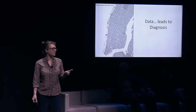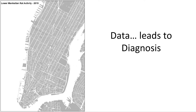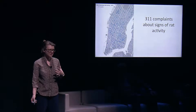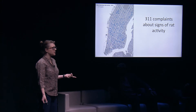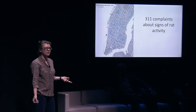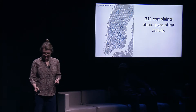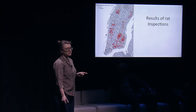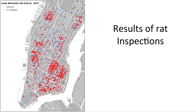Here's a map of lower Manhattan. What happens when you take that map and put 3-1-1 complaints on it about signs of rat activity? Most people know: if you see a rat, you can call 3-1-1 and report it, and it comes to us and we look at that data. But is this data showing you any real pattern? Is it explaining why rats are in the neighborhood? It's not. But when you add a layer — the results of our rat inspections — you can start to see patterns.